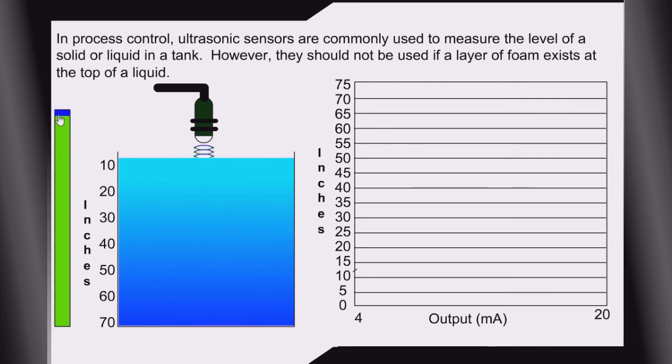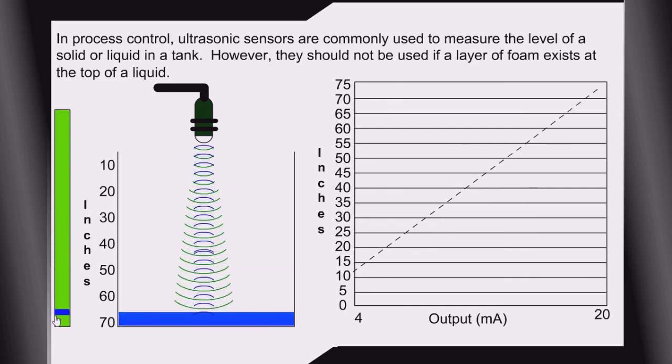However, they should not be used if a layer of foam exists at the top of a liquid. Inaccurate readings will also be made if a mist is present in the vapor space above the liquid because sound travels through a mist at a different speed than it travels through dry air.